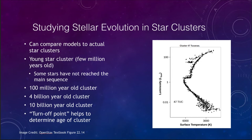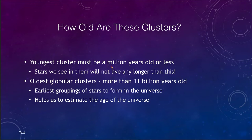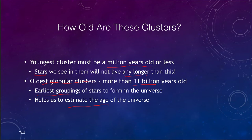The youngest clusters must be a million years old or less, because the massive stars we see there cannot live any longer — if these clusters were 2 million years old, those stars could not still be present. The oldest globular clusters we find are more than 11 billion years old. These were among the earliest groupings to form in the universe and give us an estimate of the universe's age, because the universe cannot be younger than its oldest stars.